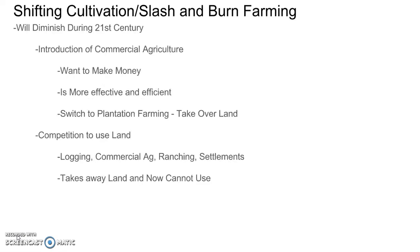It will also diminish because of the introduction of commercial agriculture — the opportunity cost of what else could be done with that land. People who own the land want to make money, and commercial agriculture is more effective and efficient, producing more. They will switch to plantation farming and take over this land, making it a money-making endeavor. Additionally, competition for land use means they'll lose out due to the inefficiency of shifting cultivation.